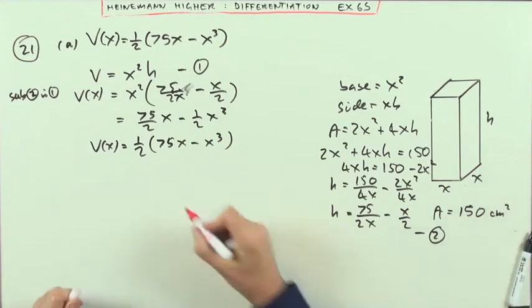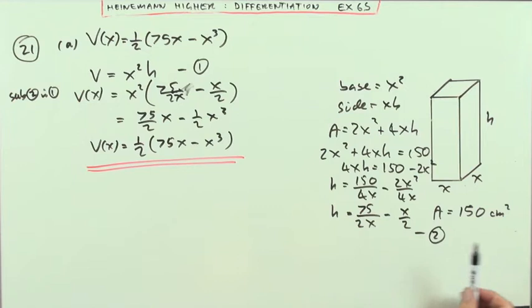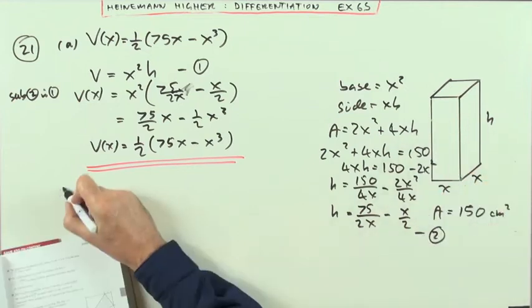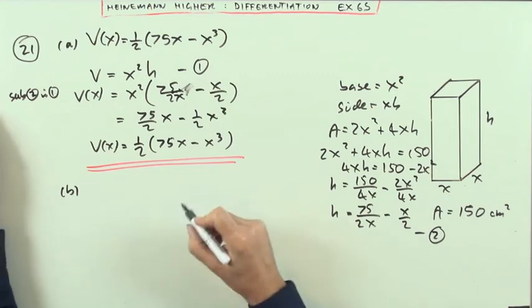So that's the first bit. Now that's not really anything to do with the higher, that's just purely algebraic, just by using areas and volumes of a cuboid. Part B, what's the dimensions that maximize? So it's an optimization, that means I want the derivative.